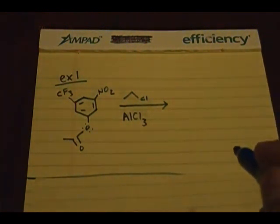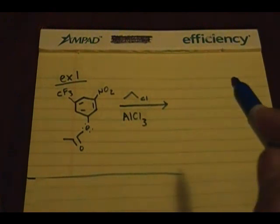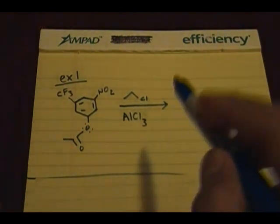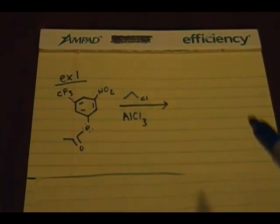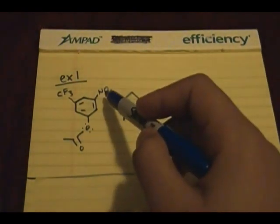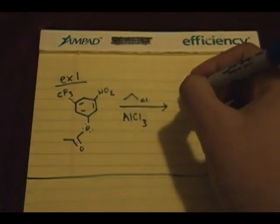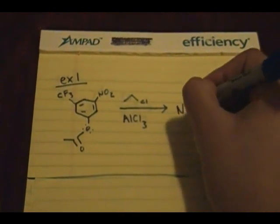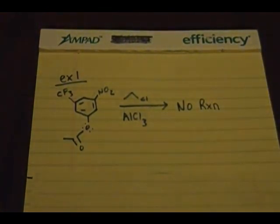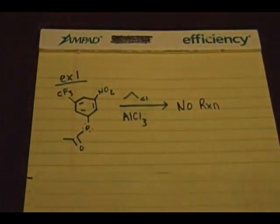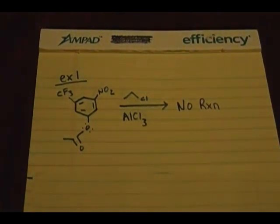Okay, some of you guys may have drawn some products, but if you guys are paying attention to my earlier videos, if you're doing the Friedel-Crafts alkylation or acylation and if you have a NO2 or a strong electron withdrawing group on it, it does not work. This will be considered no reaction. Keep that in mind, even if you have this electron donating group, it doesn't matter. No reaction, it does not work at all.